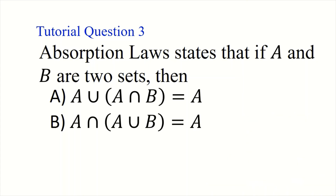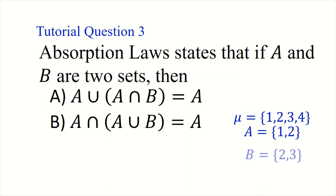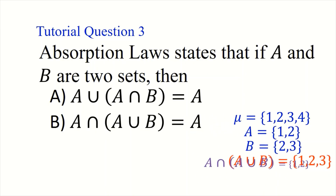Now let's consider the second aspect of absorption law, which says A intersection (A union B) equals A. Using the same example — universal set {1, 2, 3, 4}, A = {1, 2}, B = {2, 3} — A union B is {1, 2, 3}. Then A intersection (A union B) is {1, 2}, which equals A. Absorption law is confirmed correct in this case as well.